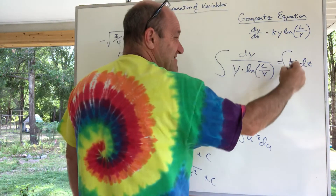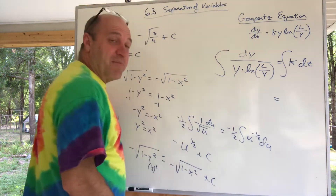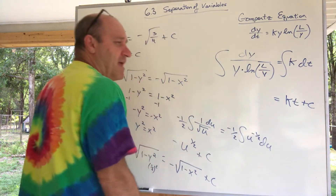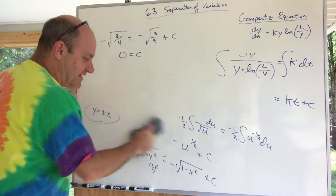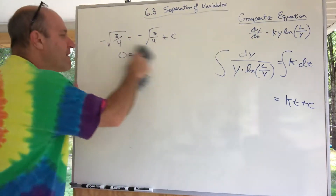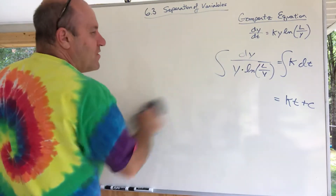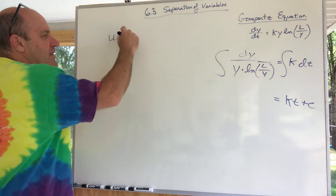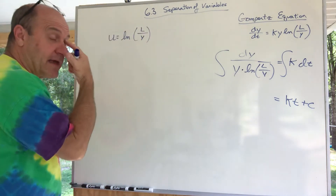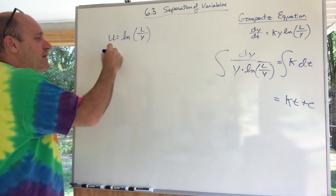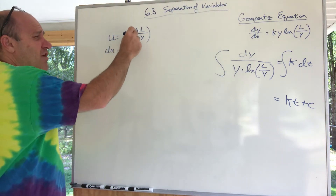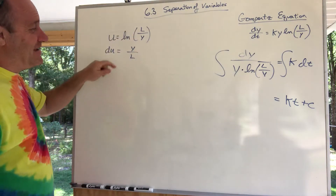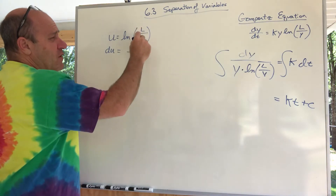Now I'll integrate. The right side is easy: integrating k with respect to t gives kt plus C. The left side — integrating 1 over (y ln(L/y)) dy — is the challenge. Let u equal ln(L/y), treating L as a constant. I need du. The derivative of ln is 1 over (L/y), which is y/L. Then times the derivative of L/y, treating it as L times y to the negative 1, which gives negative L y to the negative 2 dy.